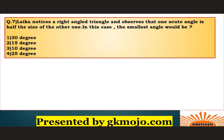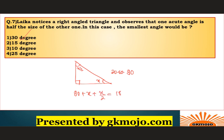Question 8: Leika notices a right-angle triangle and observes that one acute angle is half the size of the other. What is the smallest angle? This is a 30-60-90 triangle. Setting up the equation: 90 + x + x/2 = 180, so 3x/2 = 90, giving x = 60. Since x is 60, x/2 is 30. The smallest angle is 30 degrees — option A.